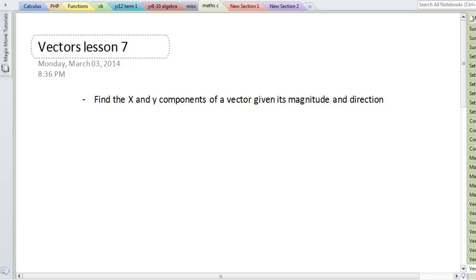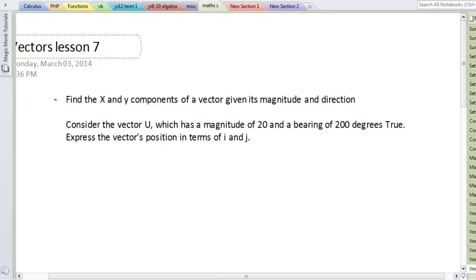Okay, so the first thing I want to do today is define a problem. The question is: consider the vector u which has a magnitude of 20 and a bearing of 200 degrees true. Express the vectors position in terms of i and j. So basically we're giving you a vector but without the x and y coordinates for i and j and we want you to find it.